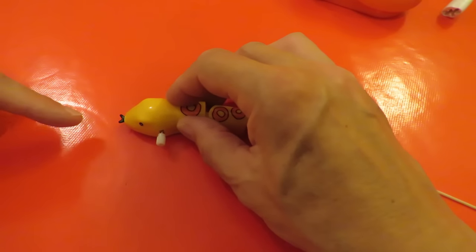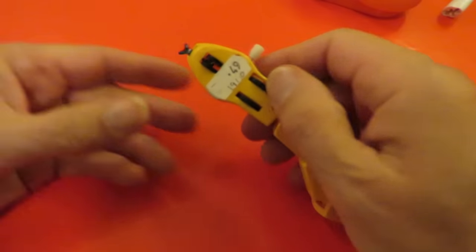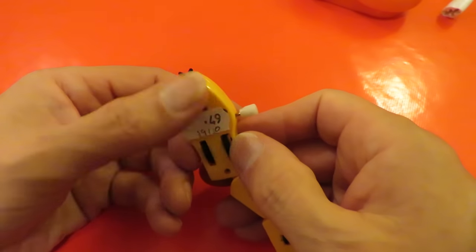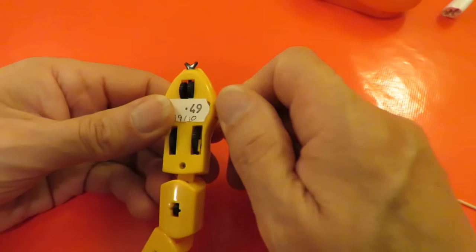It sort of works. You can see the tongue goes in and out, which is the front wheel turning, and the clockwork works fine.